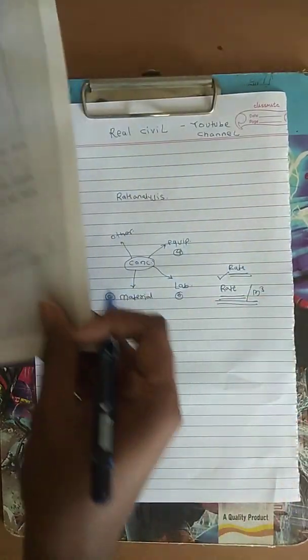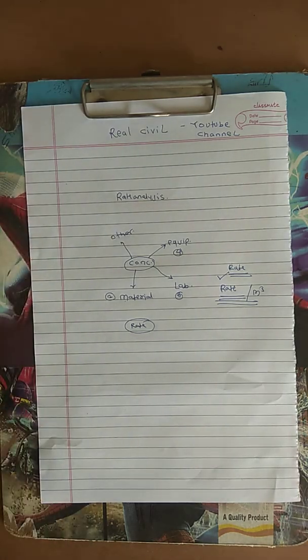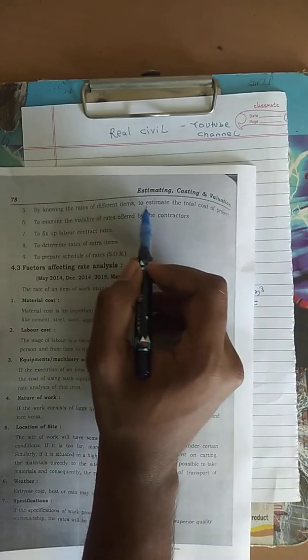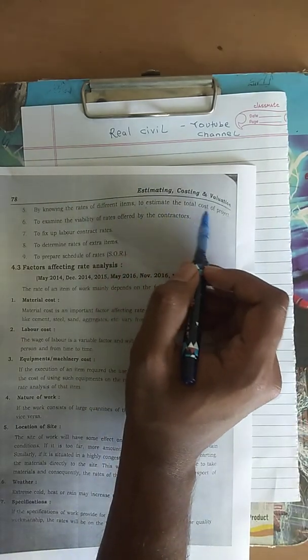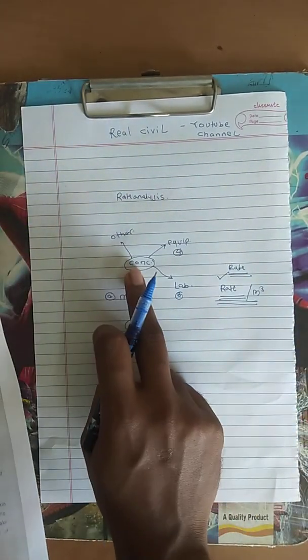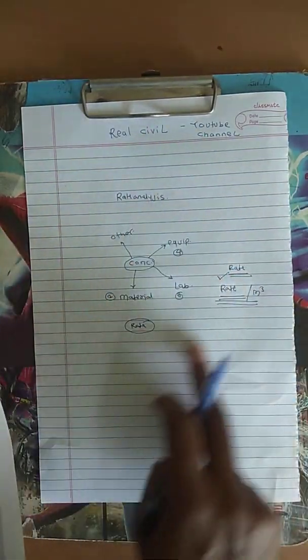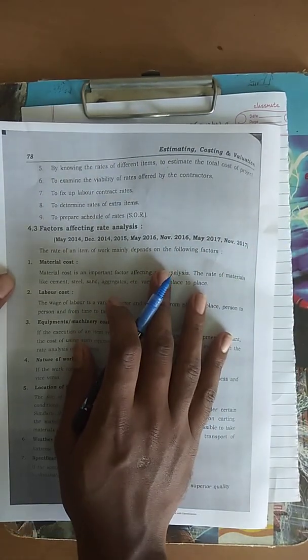Next is which type of equipment, number of equipment we will require - that is also covered here. Then there are a few more advantages. By knowing the rate of different items, to estimate the total cost of project.